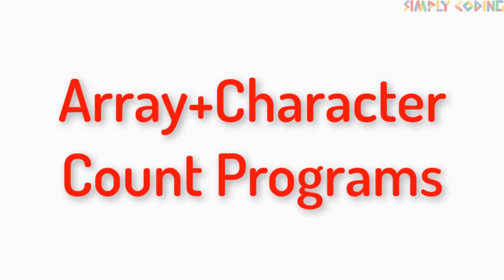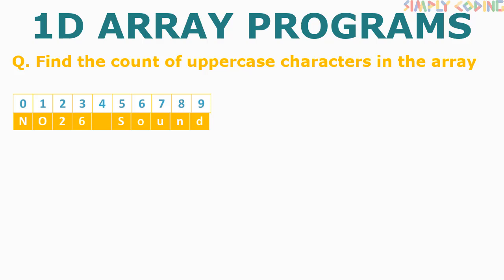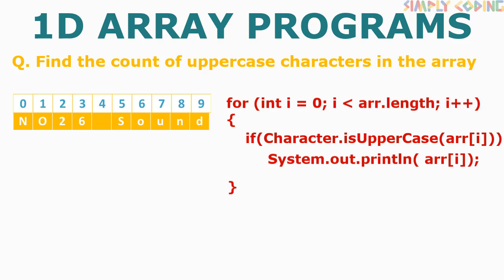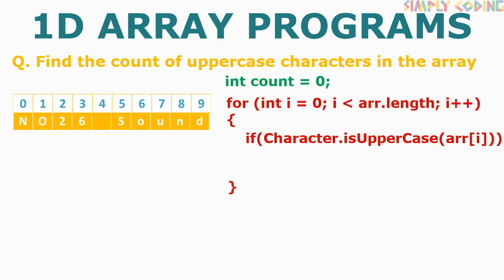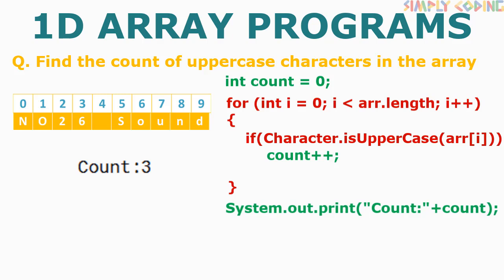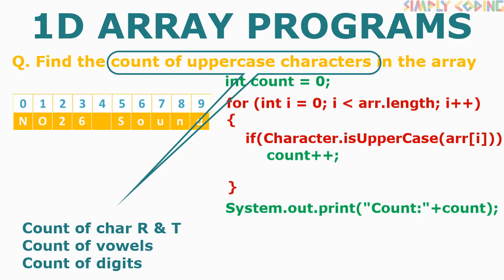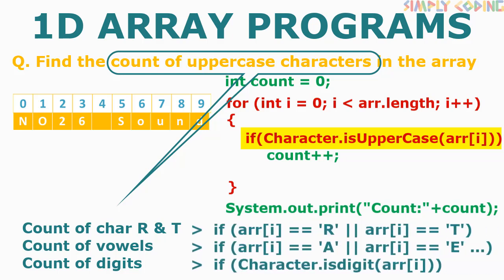For count programs on character arrays, like counting all uppercase characters, take the print program and apply the same three steps: add a count variable before the loop, inside the loop increment count by 1 instead of printing, then print count outside the loop. Variations include counting specific characters like R and T, counting all vowels, or counting digits — just change the if condition.